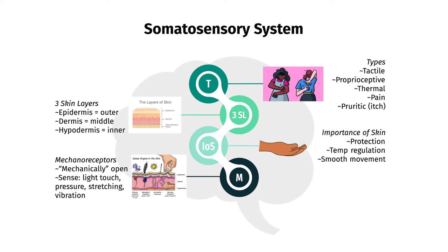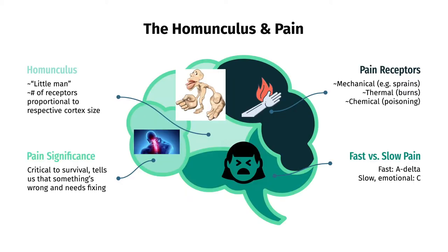There are a variety of mechanoreceptors which can sense light touch, pressure, stretching, and vibration. A map of somatosensory coding called the somatosensory homunculus, or little man, coined by Wilder Penfield, showed that certain areas of the brain, such as our hands and face, have a much greater density of receptors and thus a much greater portion of cortex devoted to them.